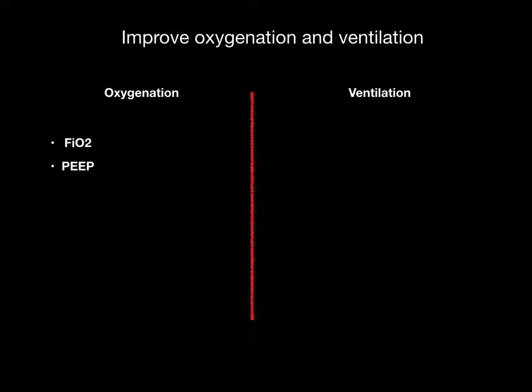If a patient has trouble oxygenating, you increase the PEEP. Usually you can increase it by factors of one or two — so if you're at six, you go to eight; if you're at eight, you go to nine or ten. It goes higher and higher, and you get into high levels when you're somewhere around 15.